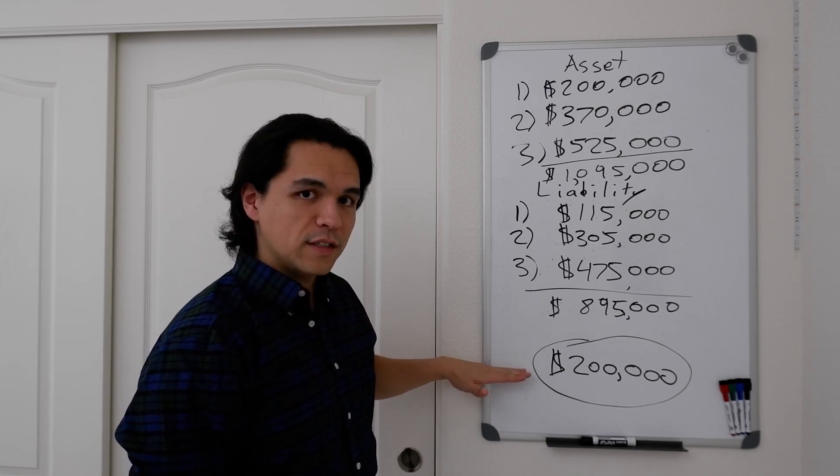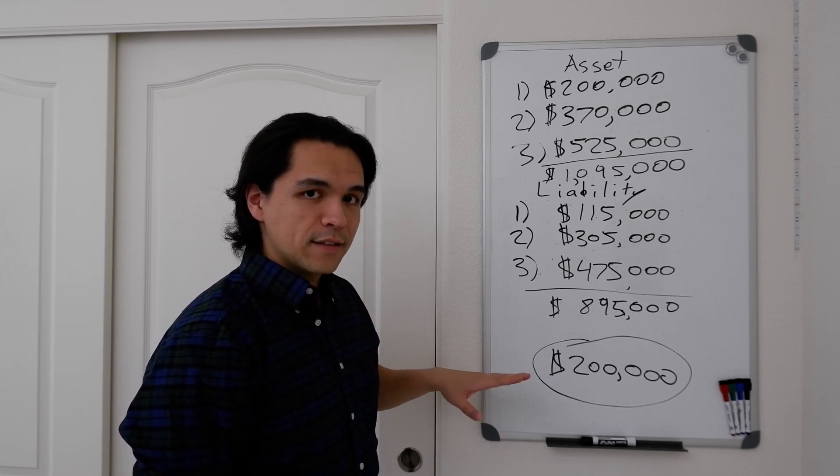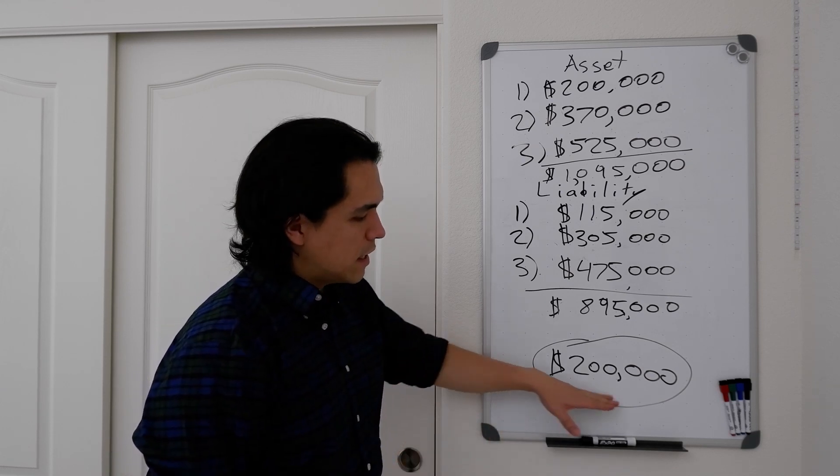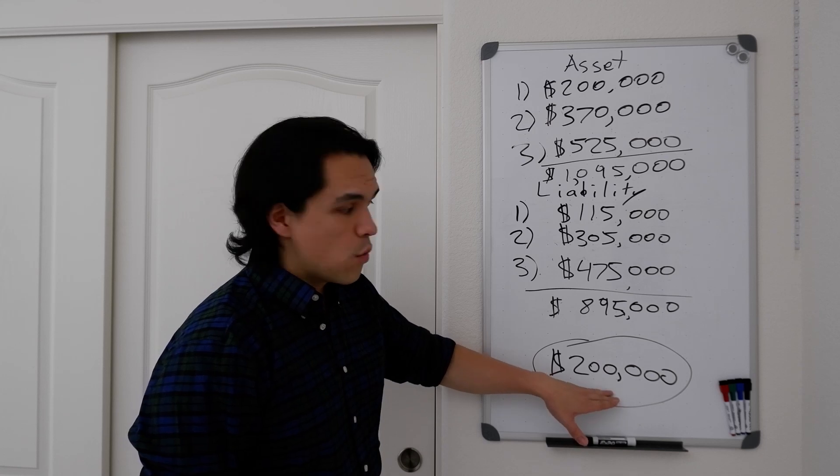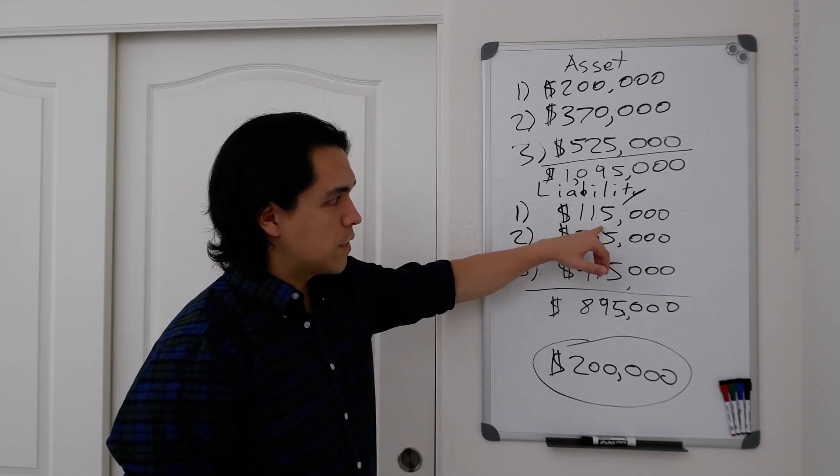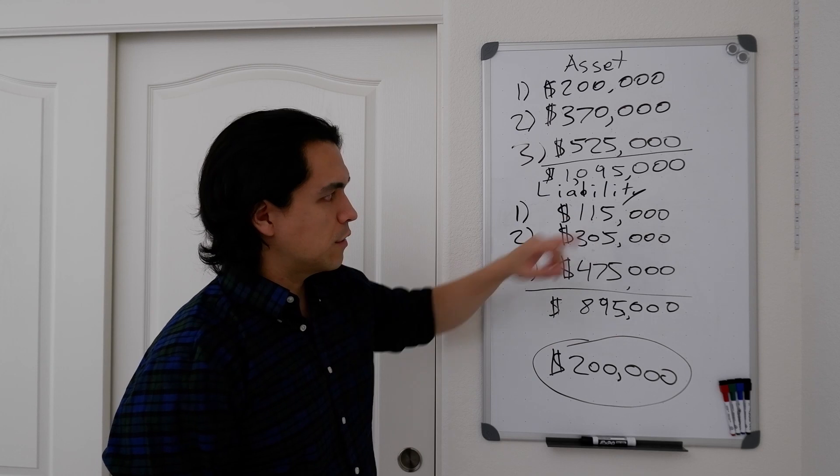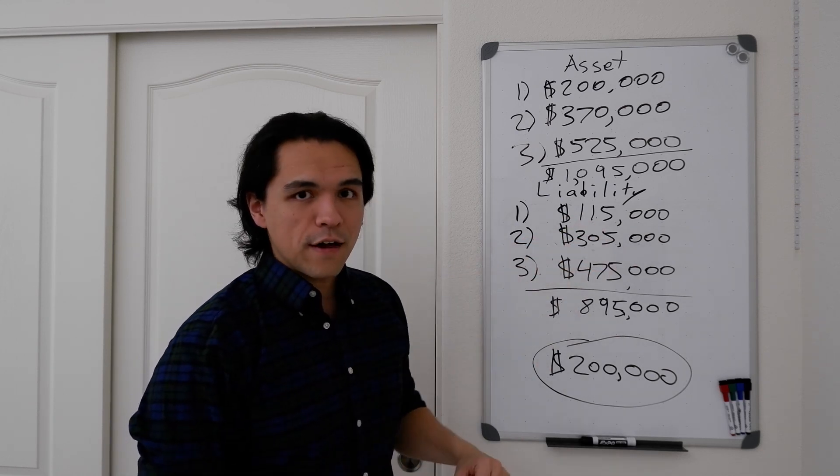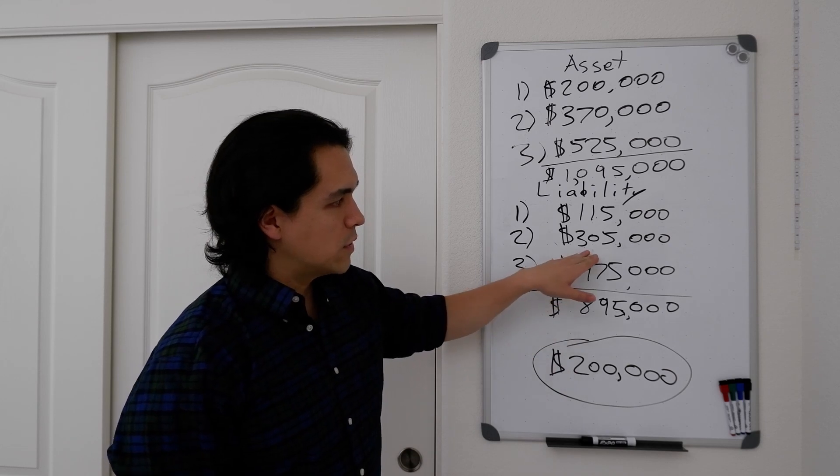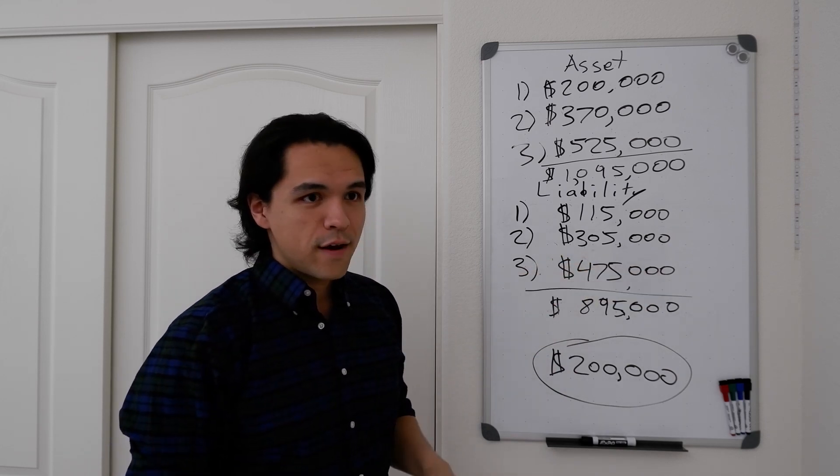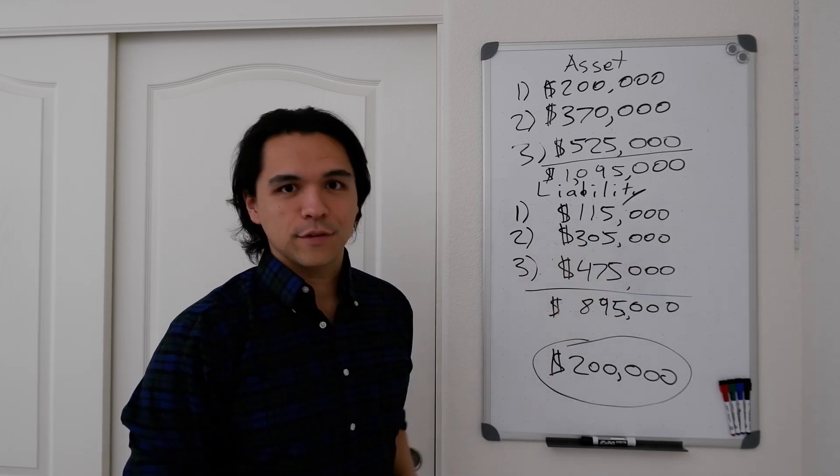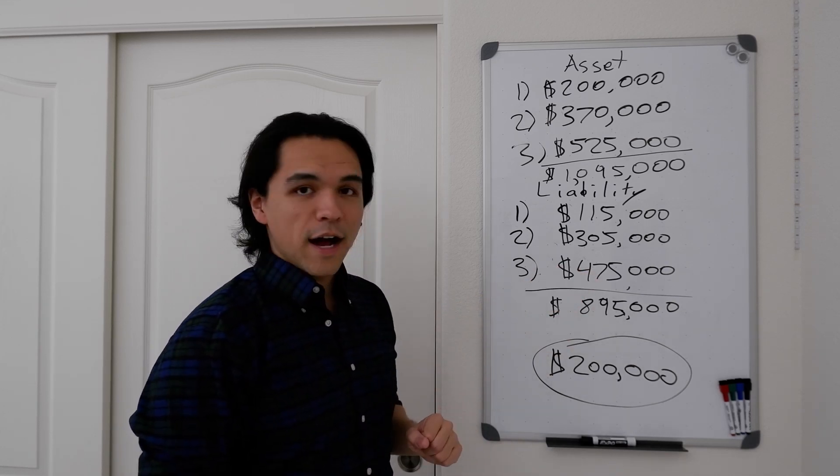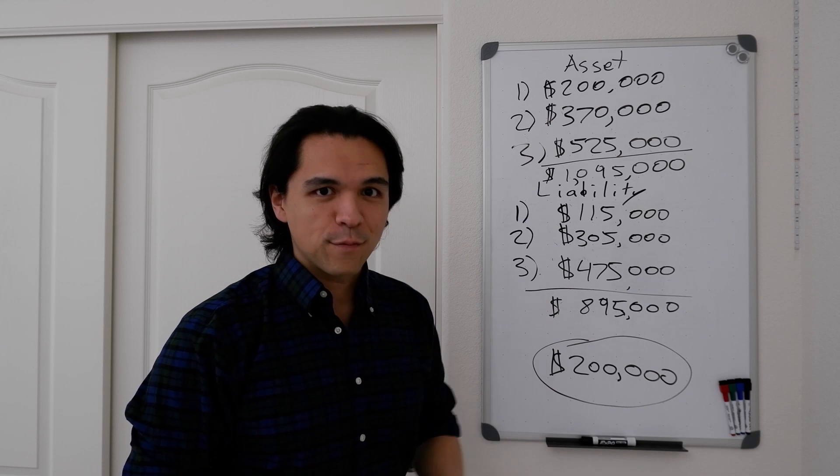The important thing to understand about debt is leverage. The amount of money that I put in to get to this number is nowhere near this big. So when I purchased this home for $145,000, I only put down five percent. When I purchased this home for $325,000, I only put down five percent. When I purchased this home for $500,000, I only put down five percent.